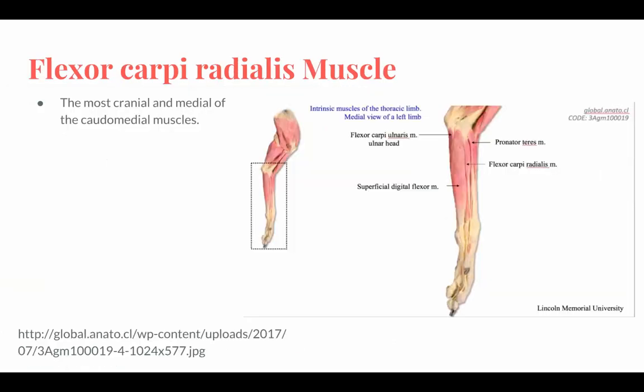Flexor carpi radialis muscle — the most cranial and medial of the caudal medial muscles. Its thick fusiform belly is partially attached to the deep digital flexor, and it only extends to the middle of the radius.